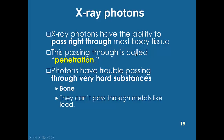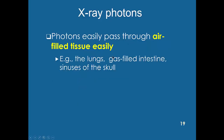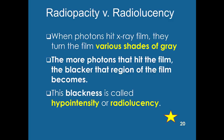Photons have the ability to pass right through most body tissue — this is called penetration. Photons have trouble passing through hard substances. For example, they don't penetrate through bone very well; only very few make it through. But something like air in the lungs is very easy for photons to zip through. When photons get through the body and hit the film, they're turned into various shades of gray. The more photons that get through and hit the film, the blacker that region becomes. This blackness is called radiolucency.